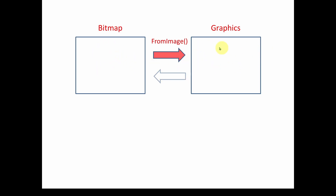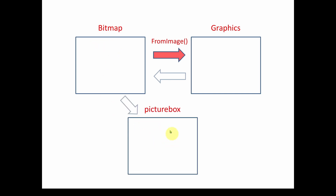What we draw in that Graphics class is automatically mapped to the bitmap. The Graphics class has many different methods for pens, brushes, drawing circles, lines, and so on — it's automatically going to map to that bitmap. Once we're done with all of that drawing, we're going to take that bitmap and send it to the PictureBox. So the basic flow is: generate a bitmap, generate a Graphics class, do all our drawing, then send that bitmap to the PictureBox.